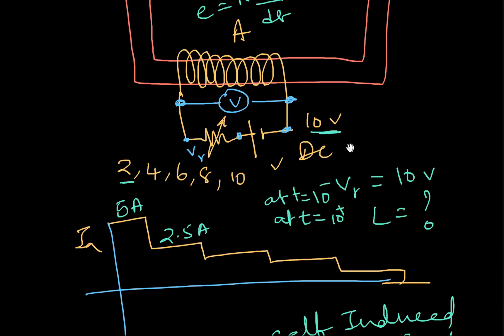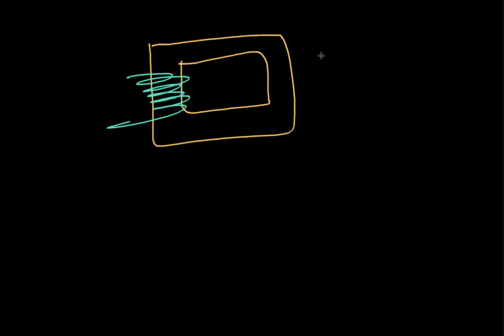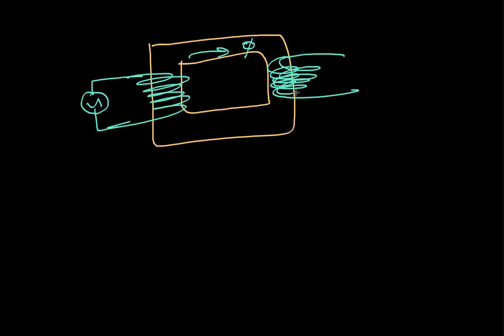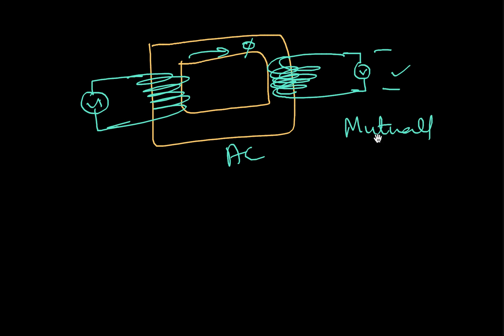Another example is a transformer: a closed core with a primary coil and a secondary coil. Applying an alternating voltage to the primary produces alternating current, which creates alternating flux. This alternating flux links with the secondary coil and induces an alternating EMF. The voltage at the secondary is proportional to the turns ratio — this is also an example of mutually induced EMF.